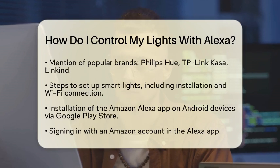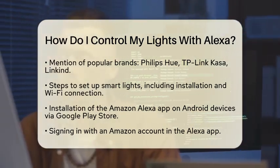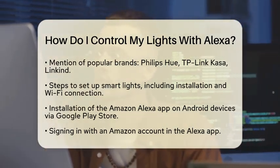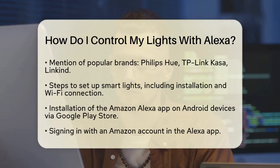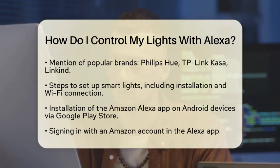Now it is time to install the Amazon Alexa app on your Android device. You can find it in the Google Play Store. Once downloaded, sign in with your Amazon account. This app will be your central hub for controlling your smart devices.